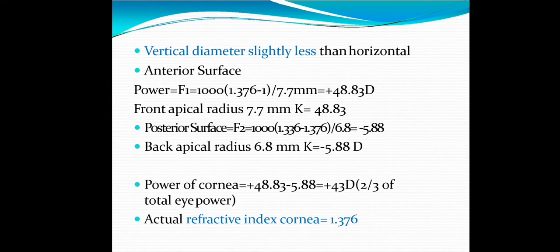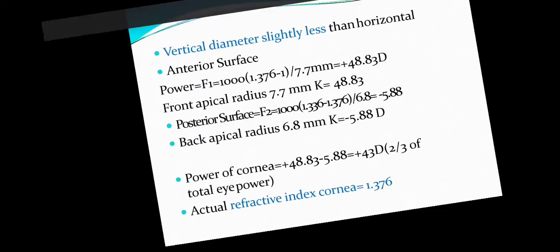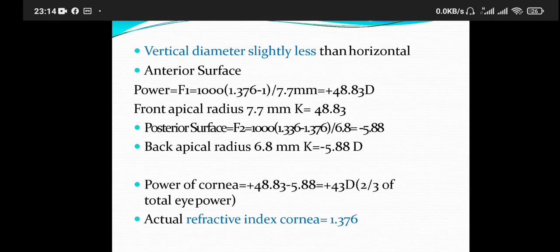Power of cornea = +48.83 - 5.88 = +43 D, which is two-thirds of total eye power. Actual refractive index is 1.376.